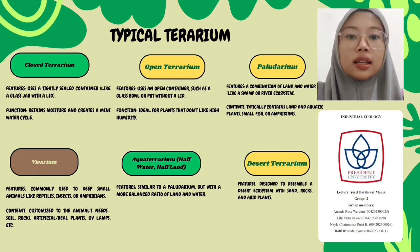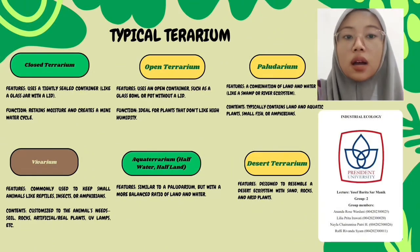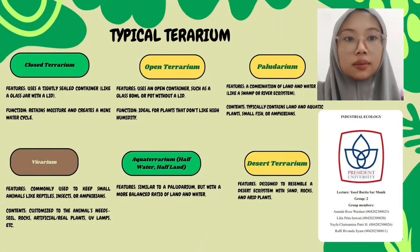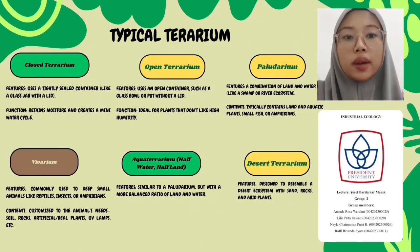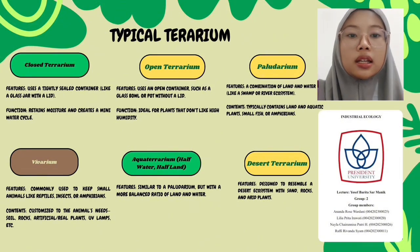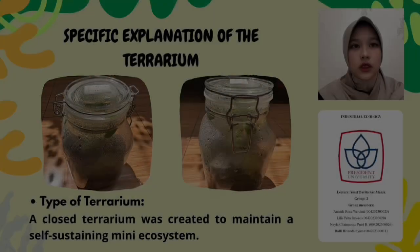The fourth is a vivarium — commonly used to keep small animals like reptiles, insects, or amphibians. It is customized with soil, rocks, artificial or real plants, UV lamps, etc. The fifth is an aqua terrarium: half water and half land, similar to a paludarium but with a more balanced ratio of land and water. The sixth and last is the desert terrarium, designed to resemble a desert ecosystem with sand, rocks, and arid plants. So that covers the specific explanation of terrarium types.